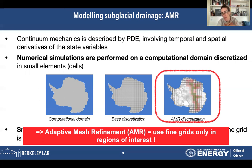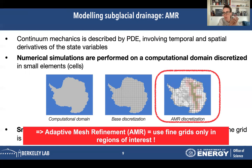In this example, let's say we're interested in the ice divide, which is usually in the middle of the domain where the ice is the thickest. You could have a sensor in your code that detects where the ice is thickest — based on the ice height, for example — and then it will add refinement only on that region of interest. In the end, we would have a discretization that resembles the highlighted one shown here.